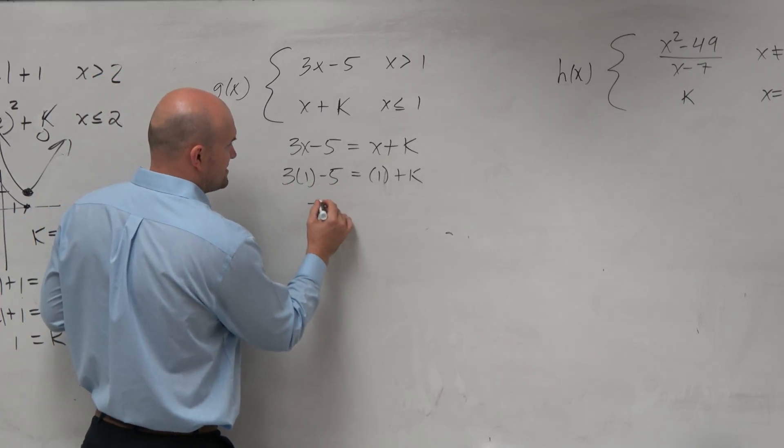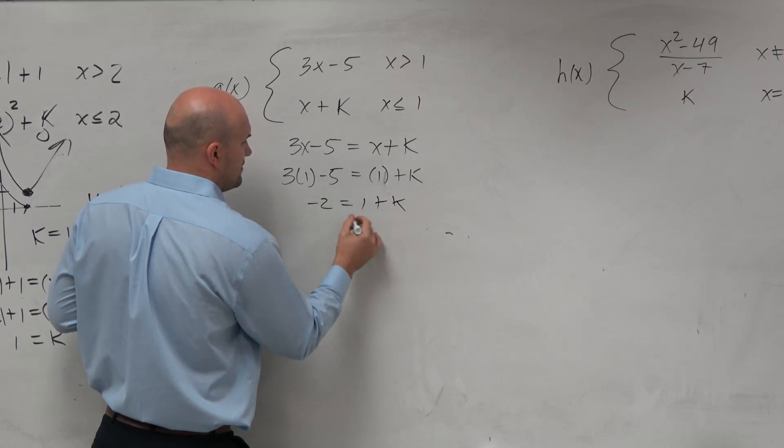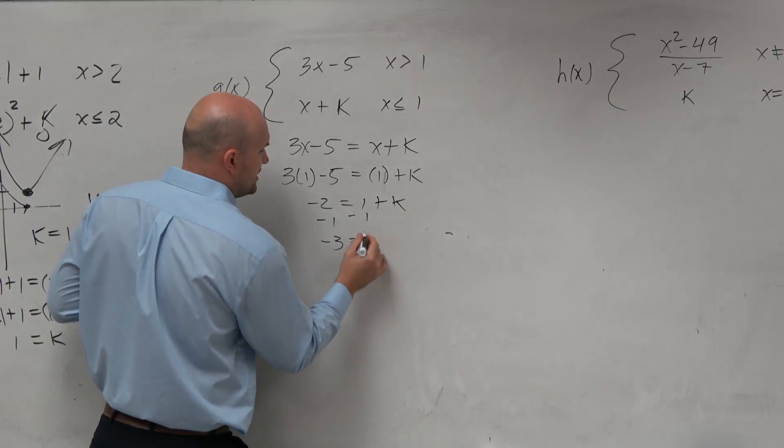So it's 3 minus 5, so that's negative 2 equals 1 plus k. Negative 3 equals k.